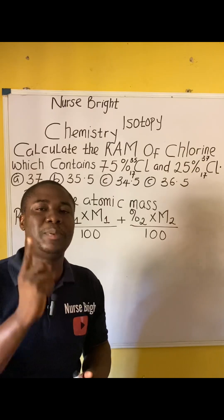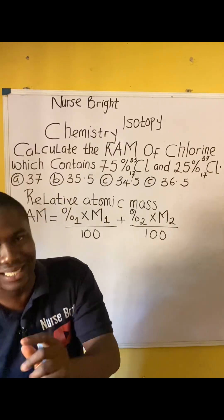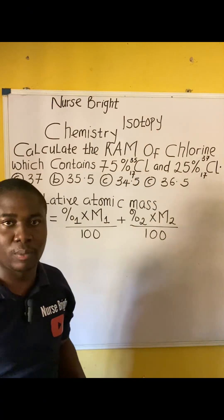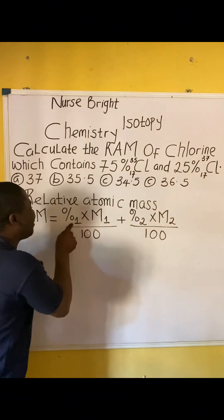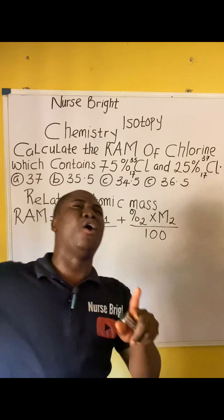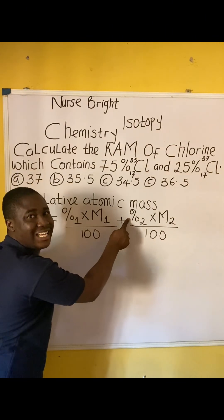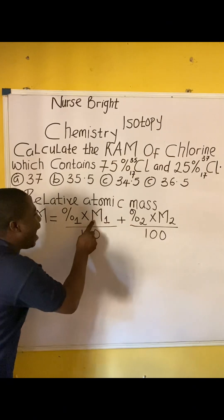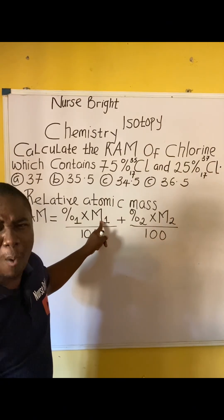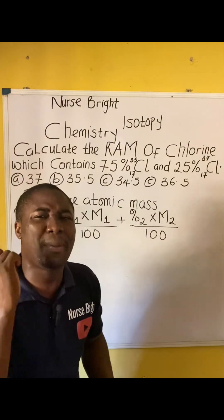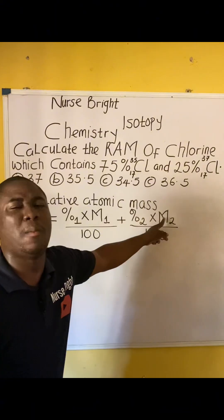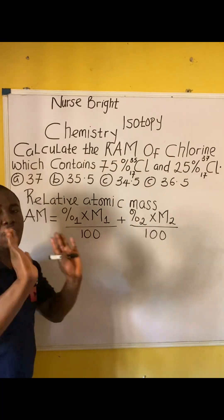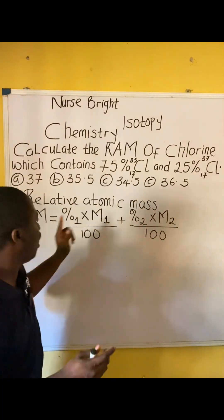In the formula, percentage one means percentage abundance of the first isotope, and percentage two means percentage abundance of the second isotope. M1 means mass number of the first isotope, and M2 means mass number of the second isotope. The formula divides each term by 100.